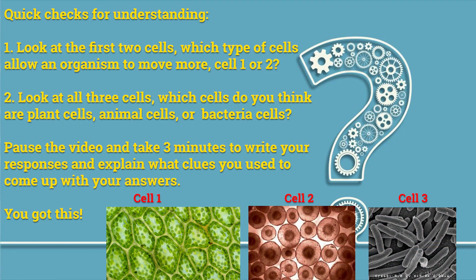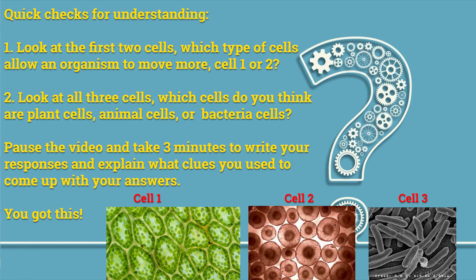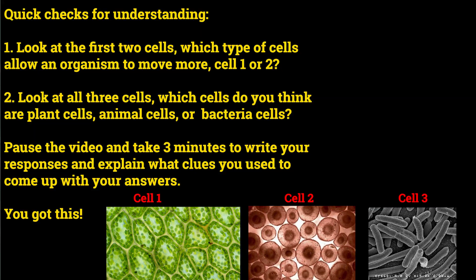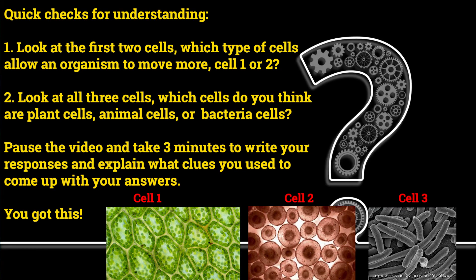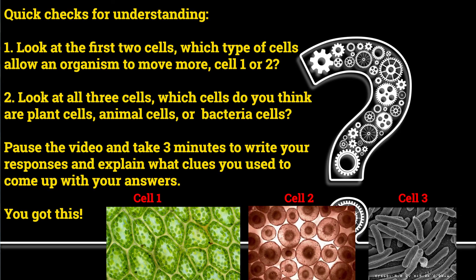Quick checks for understanding: Look at the first two cells — which type allows an organism to move more, cell one or cell two? Look at all three cells — which do you think are plant cells, animal cells, or bacteria cells? Pause the video and take three minutes to write your responses and explain what clues you used to come up with your answers. You got this!